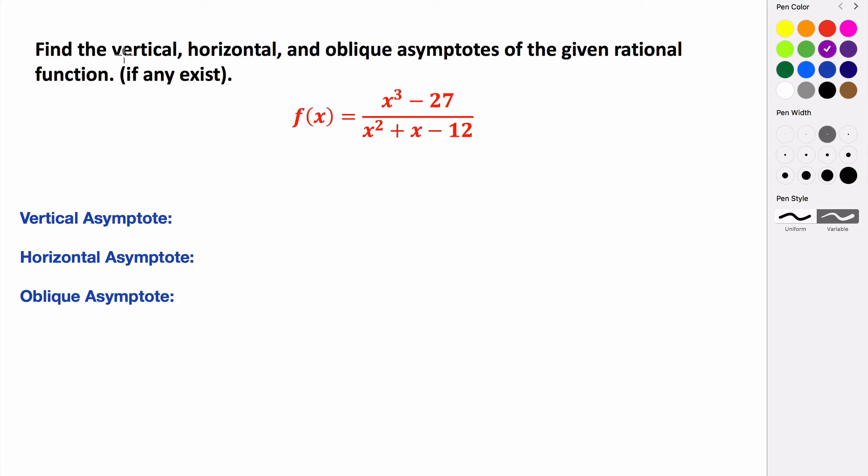For this example, we are trying to find the vertical, horizontal, and oblique asymptotes for this rational function, if they exist.